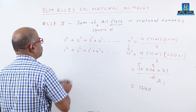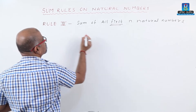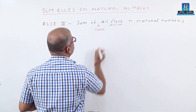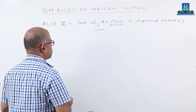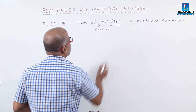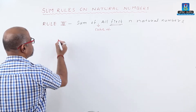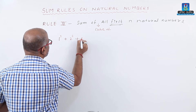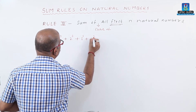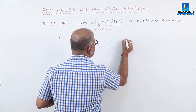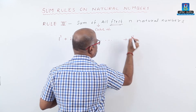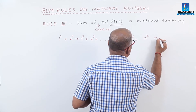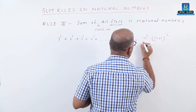Rule number 3: the sum of cubes of the first n natural numbers. That is, 1 cubed plus 2 cubed plus 3 cubed plus 4 cubed up to n cubed. The formula is n squared into n plus 1, the whole squared, divided by 4.